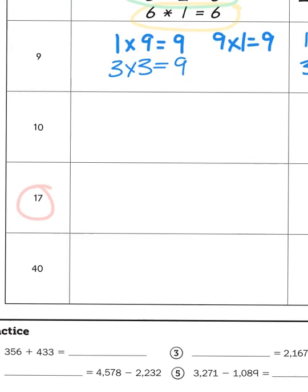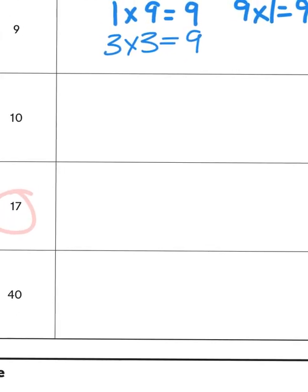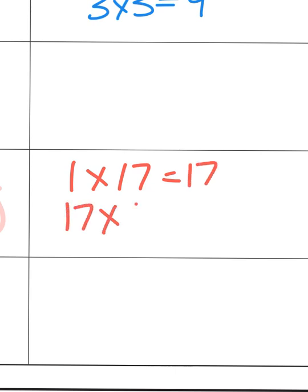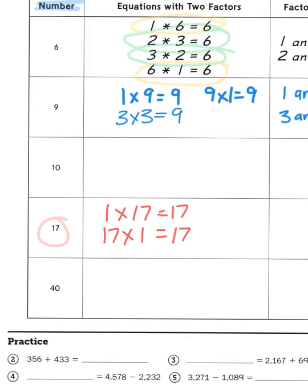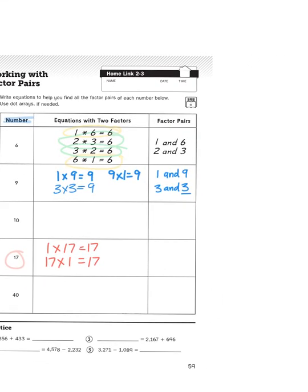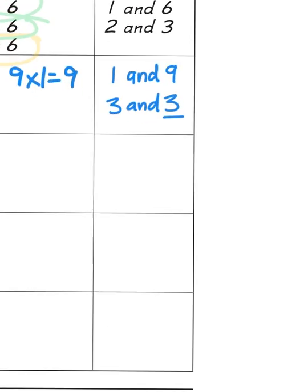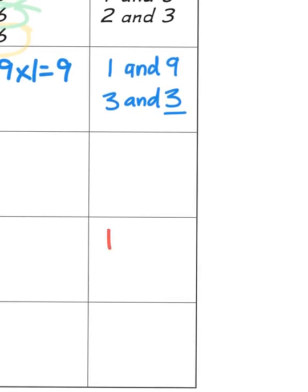So the only problems you can do for one times 17 is one times 17 equals 17 and 17 times one also gives you 17. So there's only one pair of factors and that is the number itself times one, one and 17.